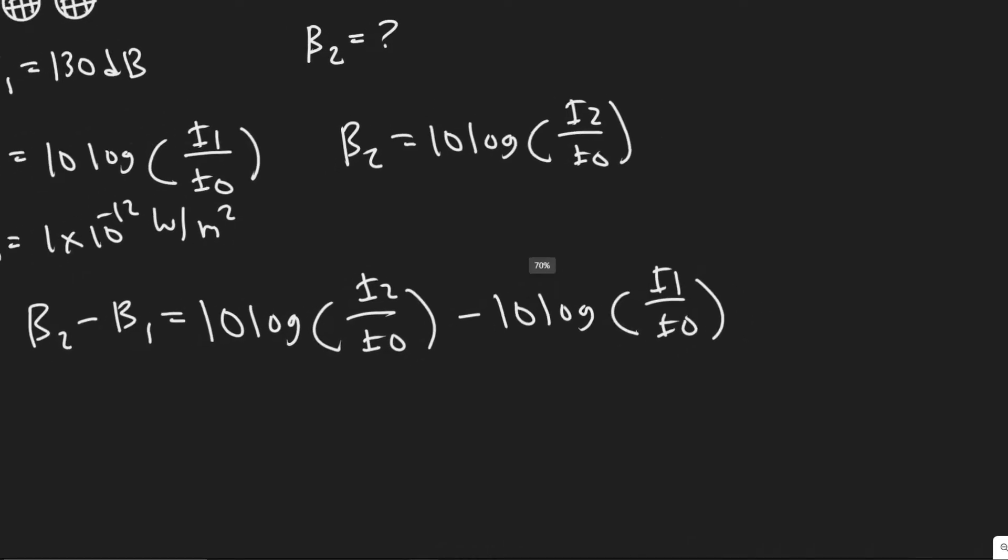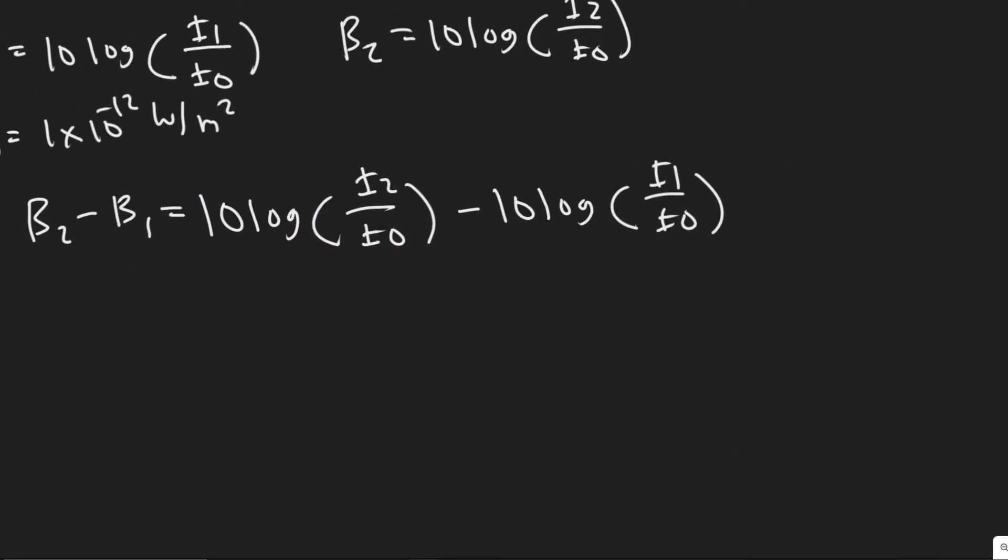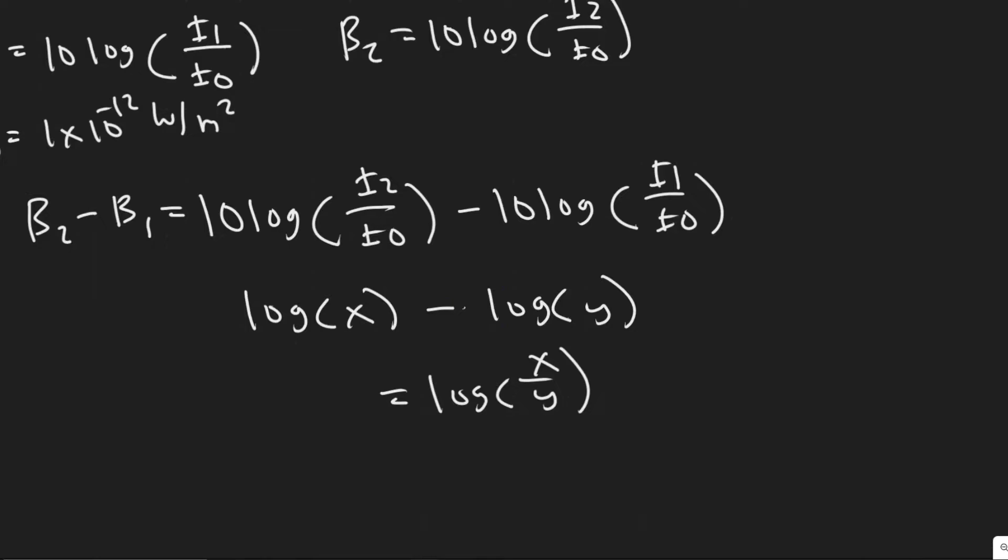Now what we're going to do is combine these two log terms together. The way we're going to do that is you should know the log of x minus the log of y is equal to the log of x over y. So what we can do is combine these two. The way we're going to do it first is by factoring out the 10.